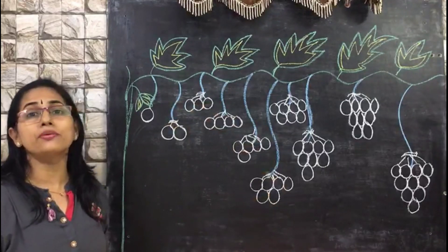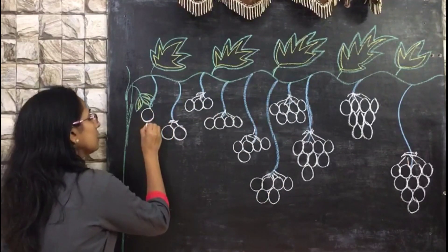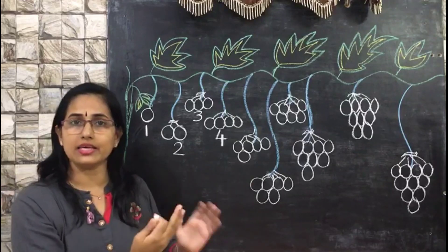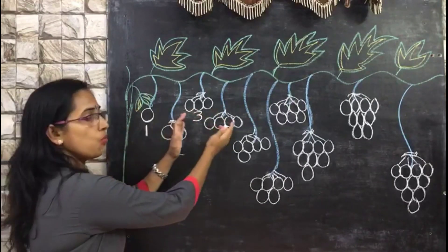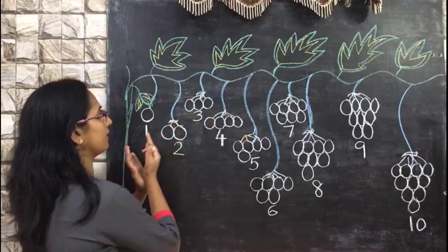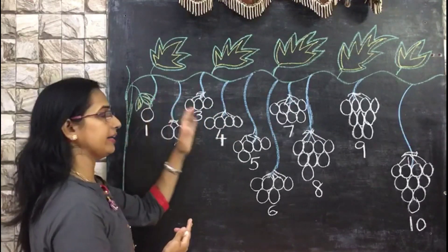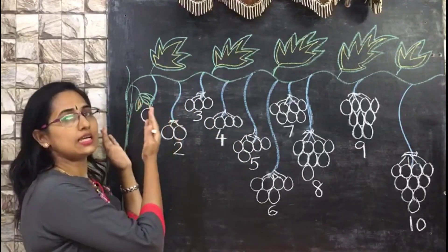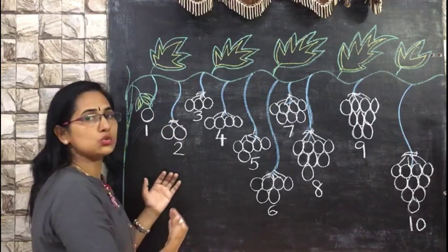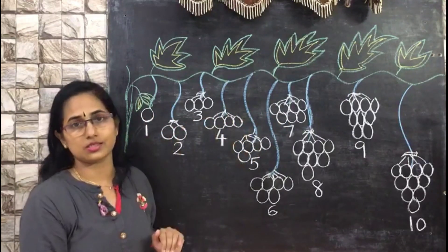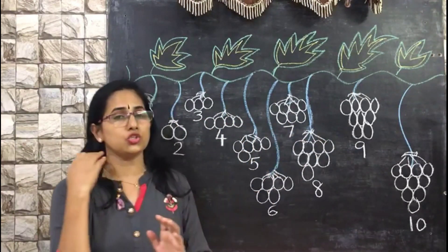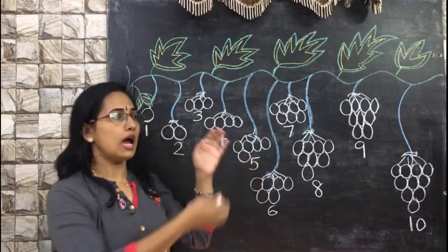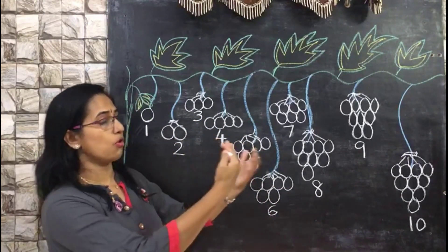Step number two: count and write the numbers below each bunch. When they count — number one, two, three, four — they start comparing. Number four is more than number one. By seeing the picture, they can easily compare both the picture and the number, and find out which has more. More means big number; very few means small number. After this picture comparison, you can ask your child to circle the big number, color the small number, or arrange numbers from big to small or small to big.